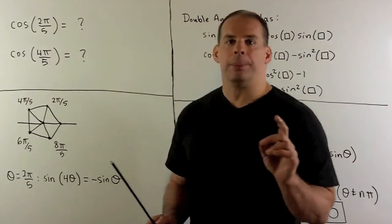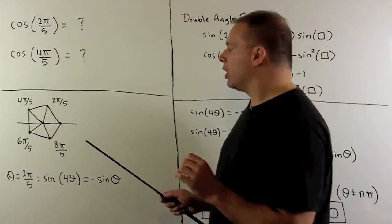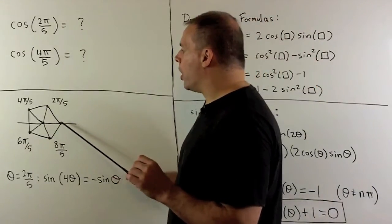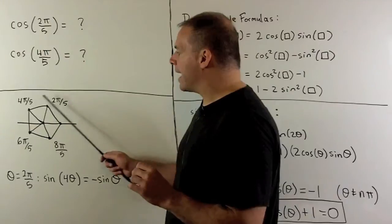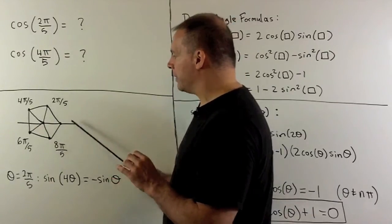Now, let's consider the unit circle. We're going to mark off all multiples of 2π/5. So we'll have a regular pentagon.